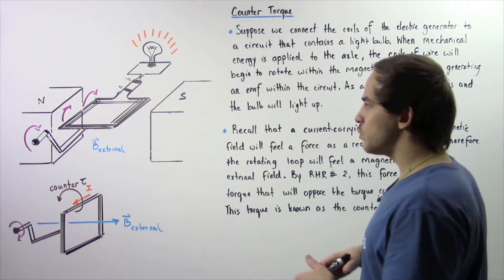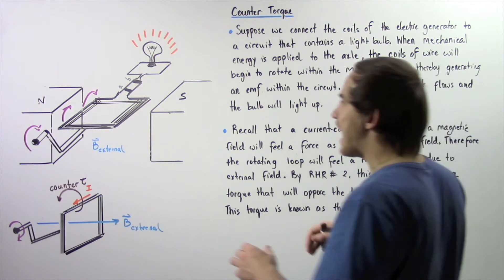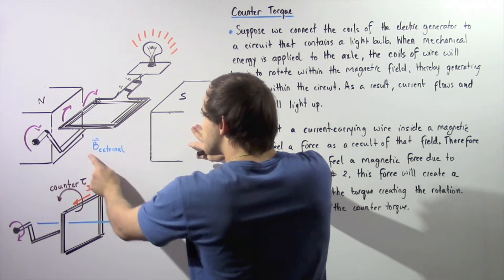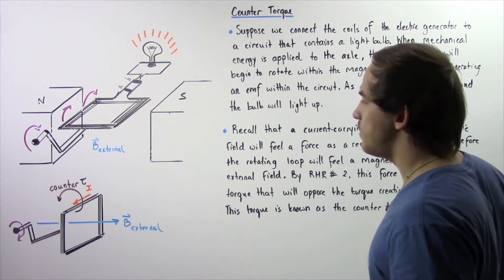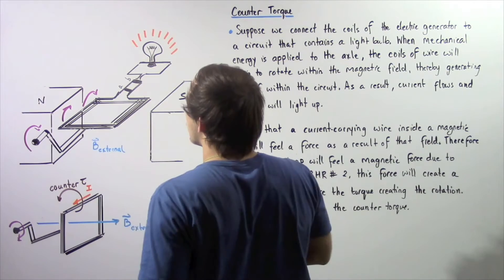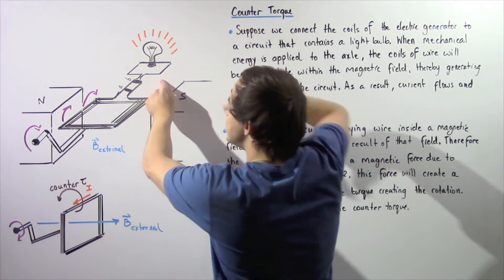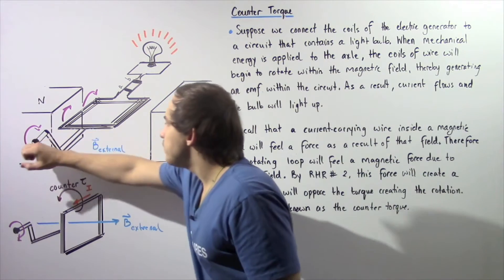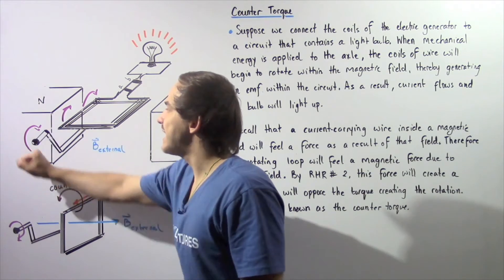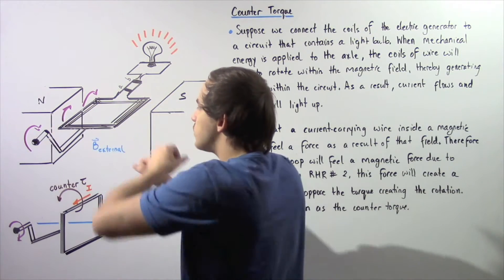Suppose we have the following depiction of our AC generator. We have our two magnets — the north pole and the south pole — and that creates an external magnetic field that is assumed to be uniform. We connect the coils of our wire to a closed electric circuit which contains a light bulb. Then we apply mechanical energy, a mechanical force, which essentially rotates our axle and also rotates the coils.